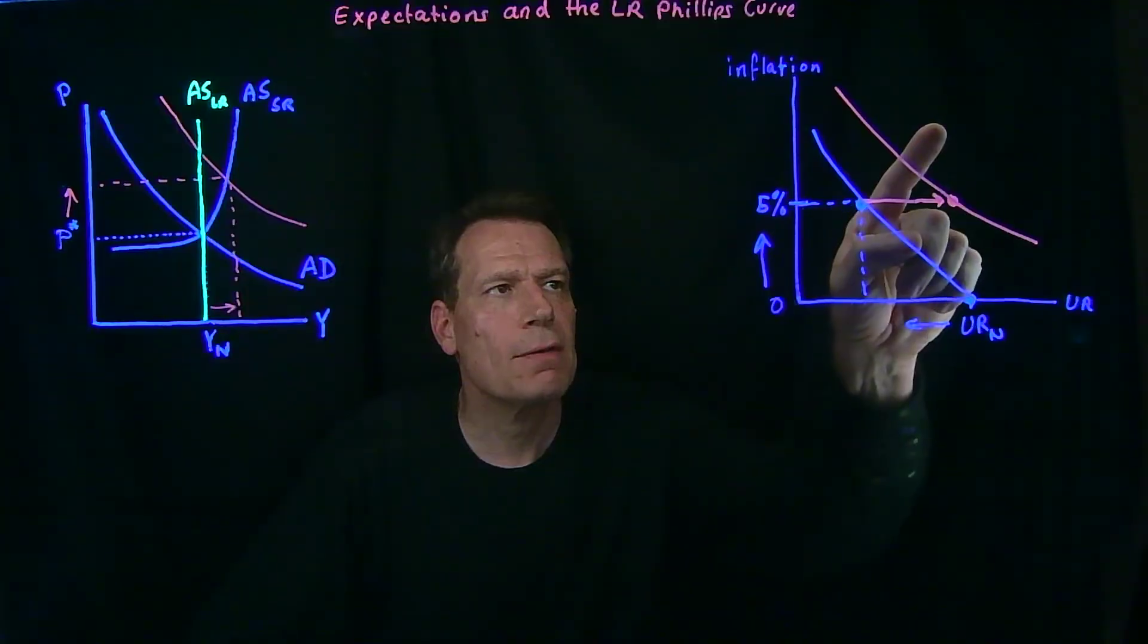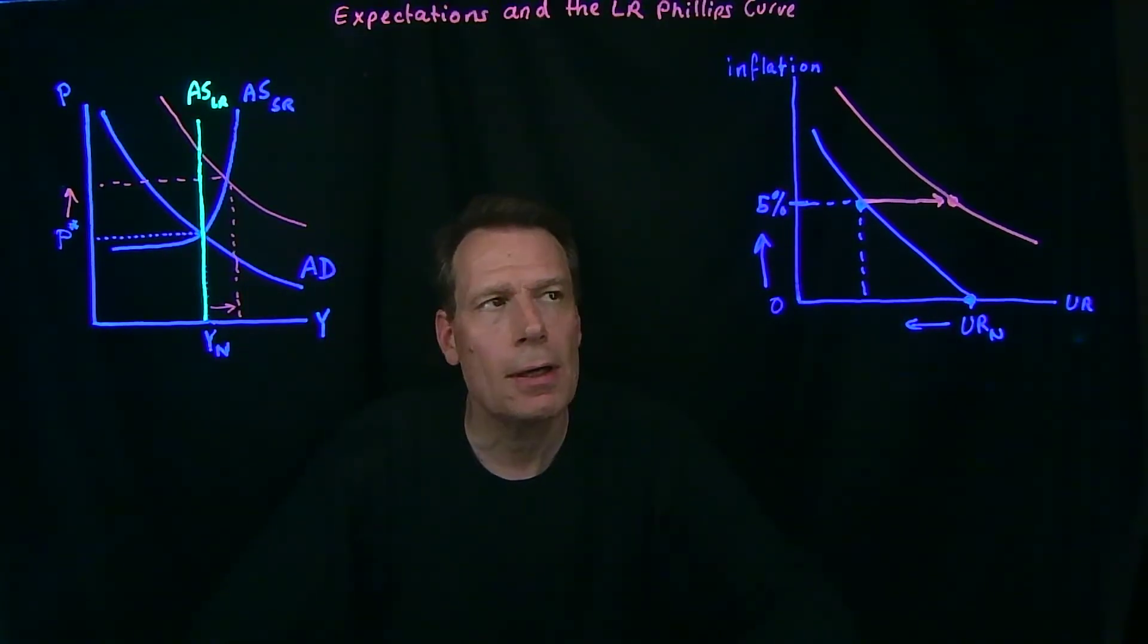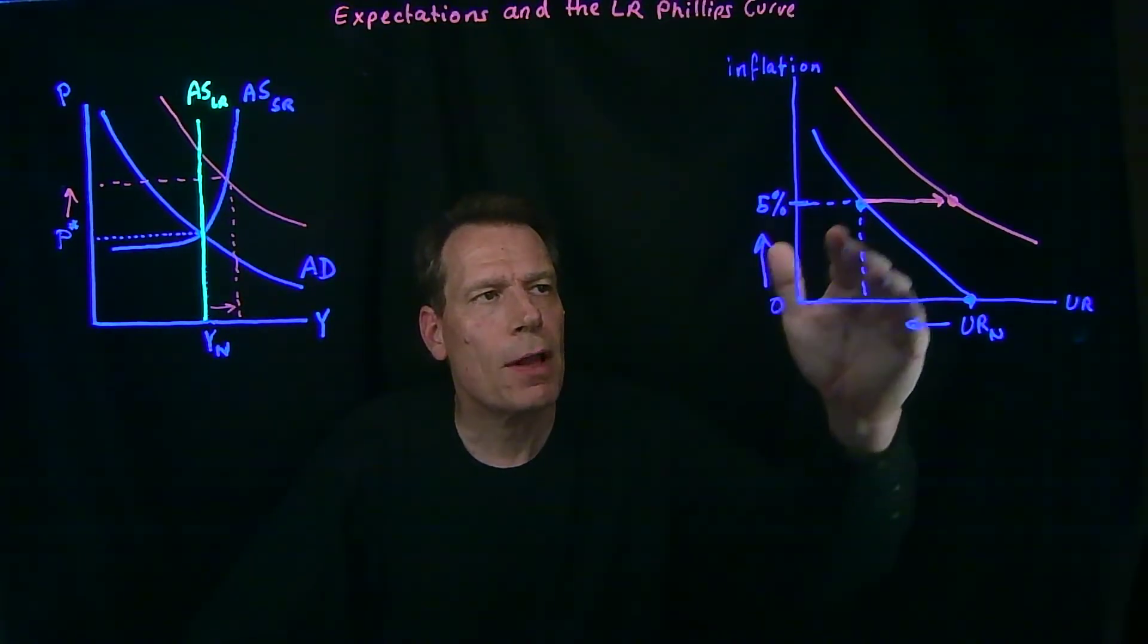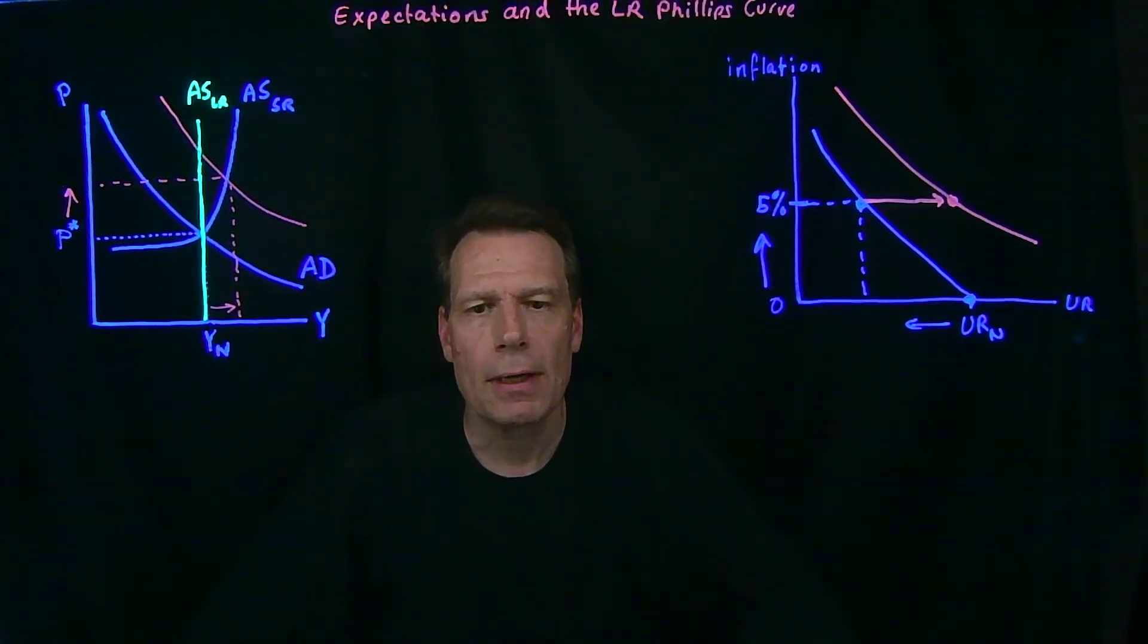Only now we'd have even higher expected inflation. We'd be on yet another Phillips curve that represents a higher level of expected inflation. So, in fact, we don't just have one Phillips curve. We have lots of different Phillips curves, each corresponding to a different level of expectations about inflation.